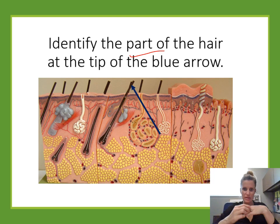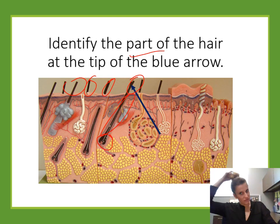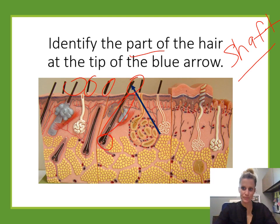Identify the part of the hair at the tip of the arrow. The hair has multiple parts: the root is the part under the surface, the bulb is the wide part at the bottom. This is pointing to the part that extends past the surface of the skin — the hair you can see, touch, cut, and brush. That is the shaft.